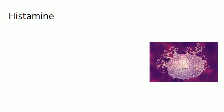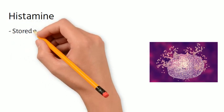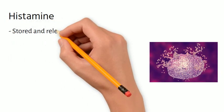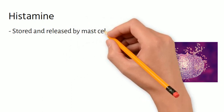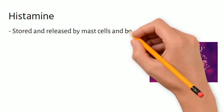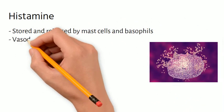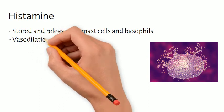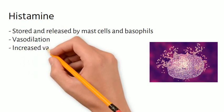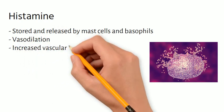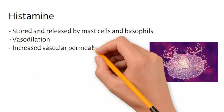Our first mediator is histamine. Histamine is among the first mediators in acute inflammation. It is stored as a preformed molecule and released by mast cells and basophils. Release of histamine causes vasodilation and increased vascular permeability.